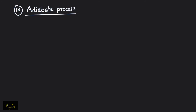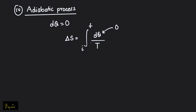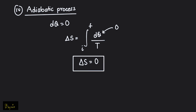All that remains is the adiabatic process. In an adiabatic process, by default, the change of heat energy is zero, which means there is no exchange of heat between the system and external surroundings. So in the expression for the change of entropy, dQ is basically zero, and since dQ is zero, there is no change of entropy. In an adiabatic process, there is basically no change of entropy.